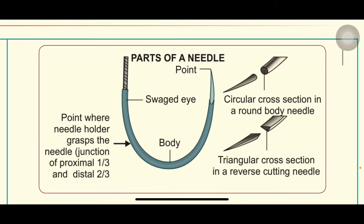Next, coming to the parts of the needle: the needle consists of a tip, that is a point, the body, and a swaged eye. A circular cross section in a round-body needle is seen here, and in a reverse cutting needle, a triangular cross section can be seen. The point where the needle holder grasps the needle is at the junction of the proximal one-third and the distal two-thirds. This is also an important question.